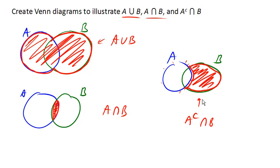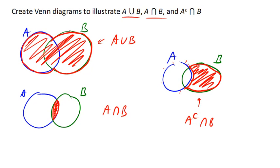So let's look at one more now, slightly more complicated one. Using a Venn diagram to illustrate this intersection. So now here we have three sets. So we're going to need one, two...